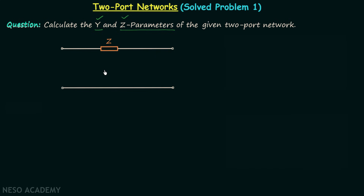Okay, now we will understand the solution of this question. First I will explain the conventional method, and then I will explain the shortcut method. In order to follow the conventional method, we will first mark all the currents and voltages of this two-port network.